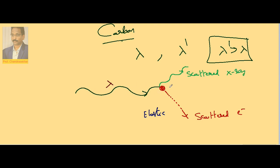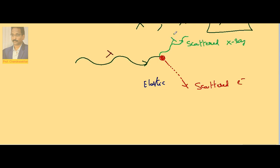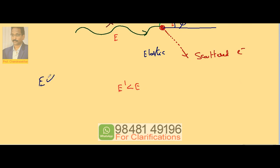Not all x-rays interact this way — some undergo elastic scattering from the electron. During this process the x-ray definitely loses energy. If E is the incident energy and E dash is the final energy, then E dash is less than E because some energy is transferred to the electron. The scattered x-ray moves at angle phi, so its energy is less, meaning lambda dash is greater than lambda.